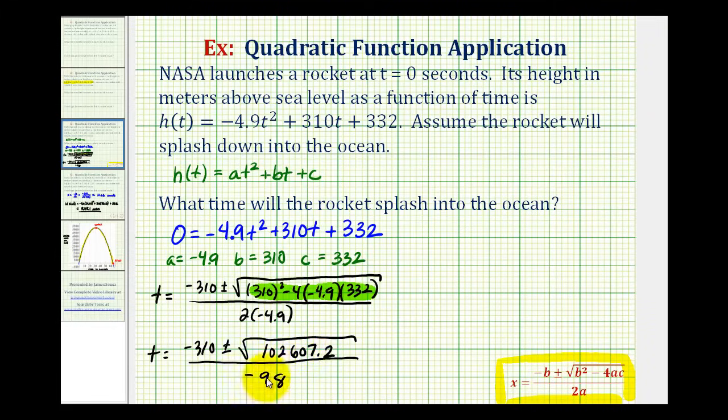Now notice, because of the plus or minus, we are going to have two solutions. Remember, t represents the time in seconds, and t can't be negative. So one solution is going to be negative, which doesn't make sense. So we'll exclude that one, and then we'll only use the positive value of t for the time when the rocket splashes into the ocean.